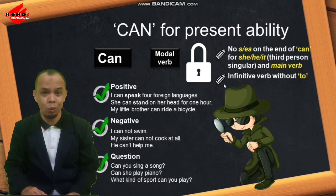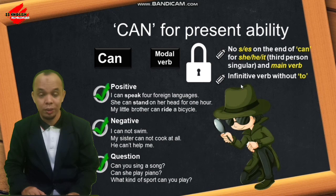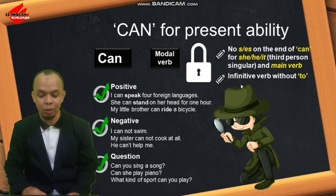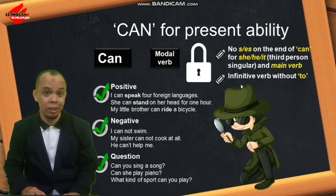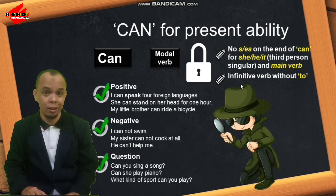The first rule: ketika kita menggunakan kata 'can', walaupun subjeknya adalah third person singular — she, he, it — kita tidak menggunakan akhiran s atau es pada 'can' maupun pada kata kerja utamanya. Peraturan yang kedua: setelah 'can', kita menggunakan verb infinitive atau kata kerja dasar tanpa menggunakan kata 'to'. Untuk lebih jelasnya, pay attention to this example.